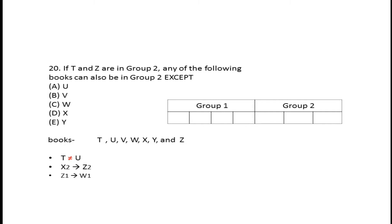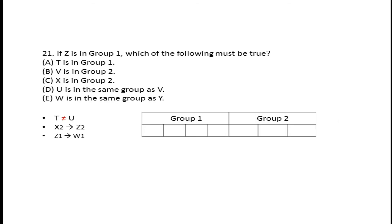Any of the following books can also be in Group 2 except - T and Z are in Group 2, but T and U have a relationship that they cannot be in the same group, so U cannot be in Group 2.